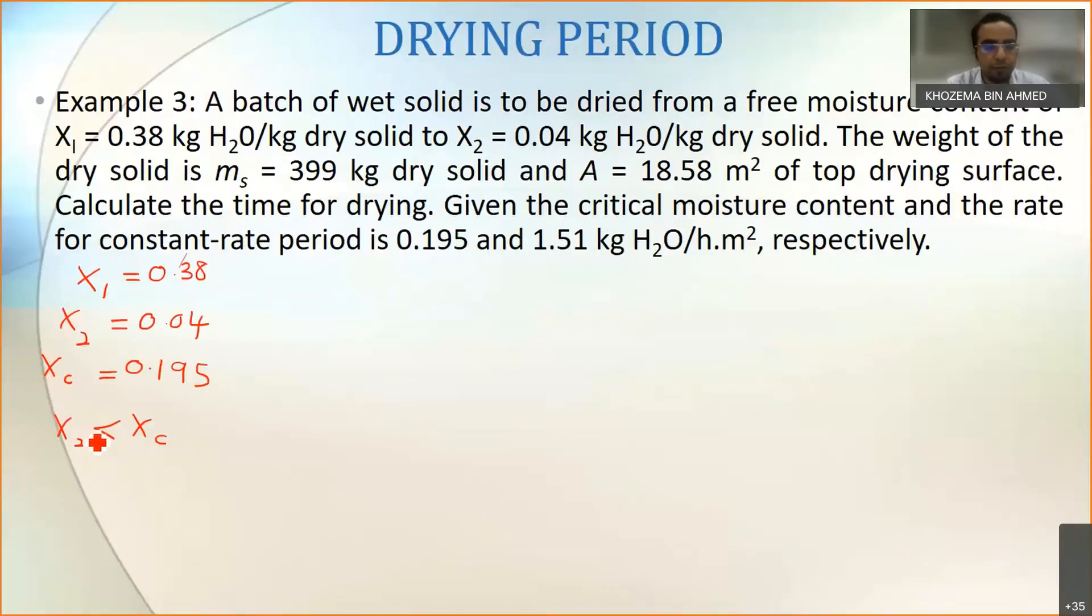So if we represent it on a graph in our rate of drying curve, let's say this is the value of Xc at 0.195. The value of X1 is around here at 0.38, and the value of X2 is 0.04, so it's around here somewhere.